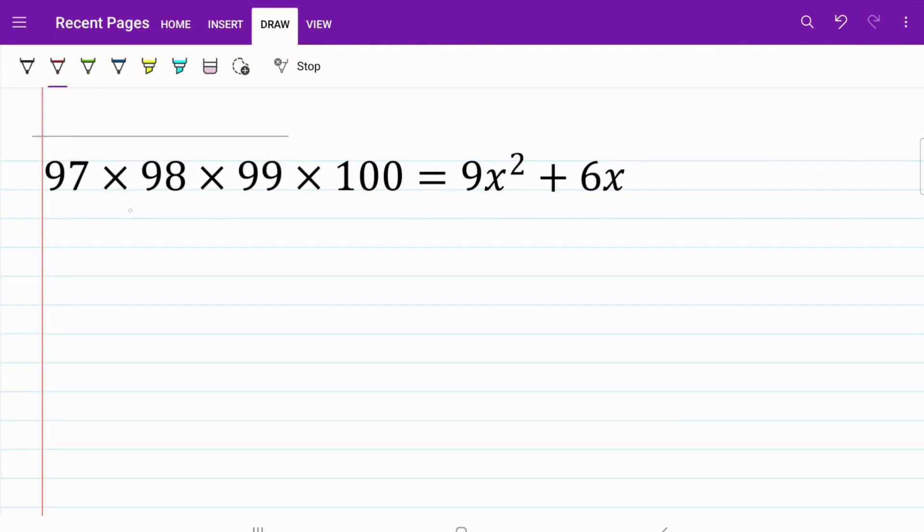On the left side of this equation, I have a product of four consecutive numbers, whereas on the right-hand side, I have a quadratic expression. So the most direct approach to deal with this is to work out the product of these four numbers, move it to the right-hand side, and from there try to solve the quadratic equation.